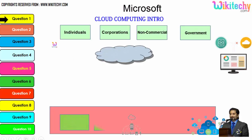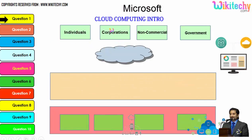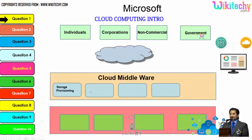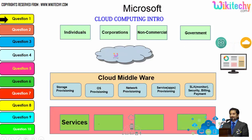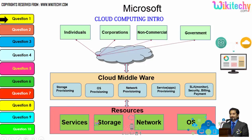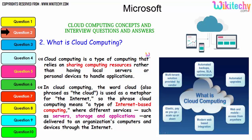There are different types of users: individuals, corporations, non-commercial people, and government. From any of these users, they are able to access services, storage, networks, or operating systems via the cloud. The middle layer consists of specialized software provided by the cloud service provider to allow end users to access resources. This is how the cloud computing architecture works.